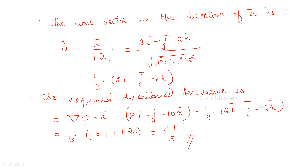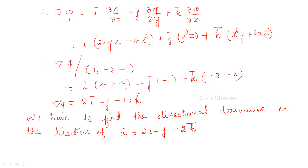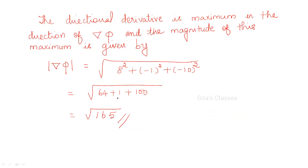Take the dot product of corresponding i, j, k coefficients: 8 times 2 for i, (−1)(−1) = +1 for j, and (−10)(−2)/3 = +20/3, giving the result. The directional derivative is always maximum in the direction of del phi, and the magnitude of this maximum is |del phi|. With del phi = 8i − j − 10k, the maximum is √(64 + 1 + 100) = √165.